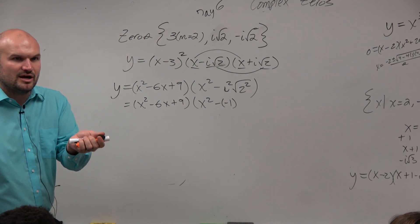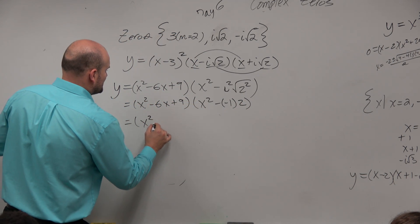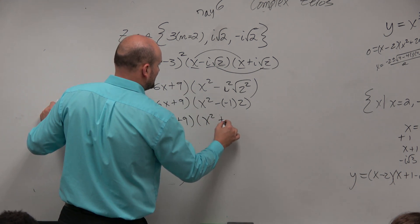Square root and squaring are inverse operations, right? 2. So we're really just left with x squared minus 6x plus 9 times x squared plus 2.